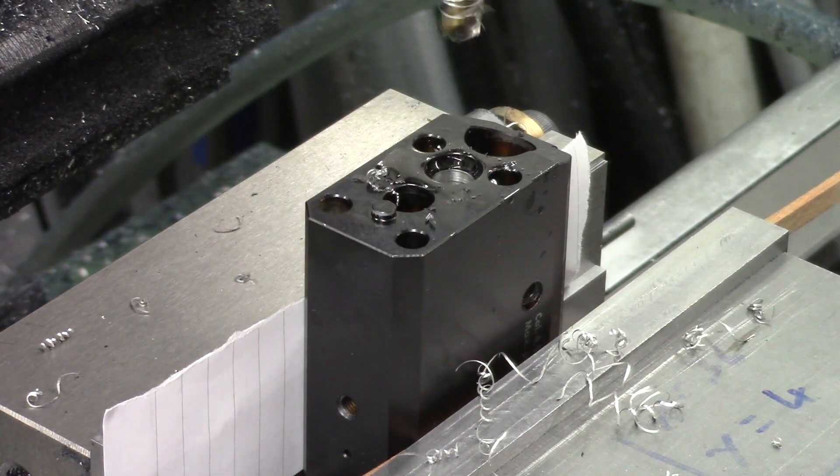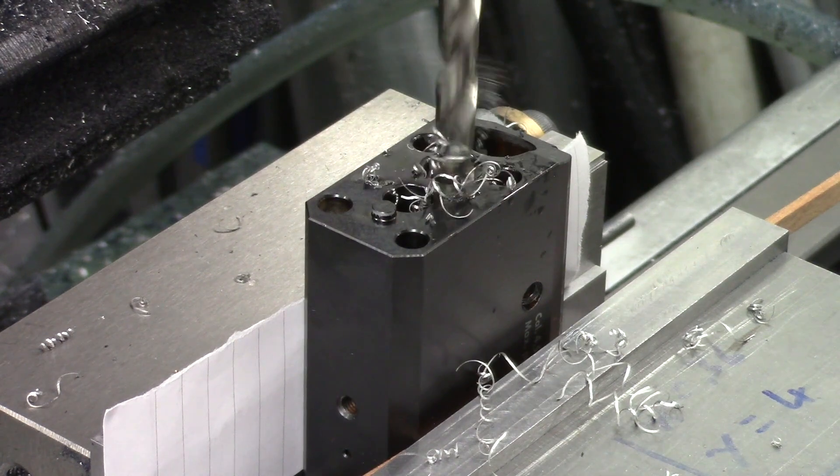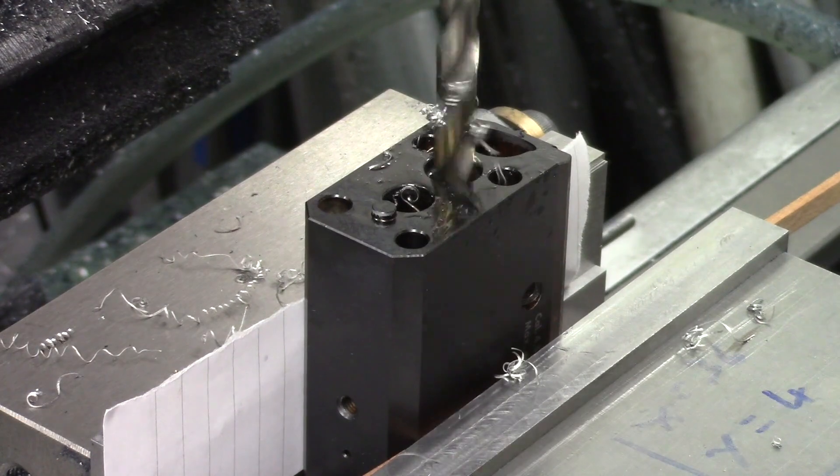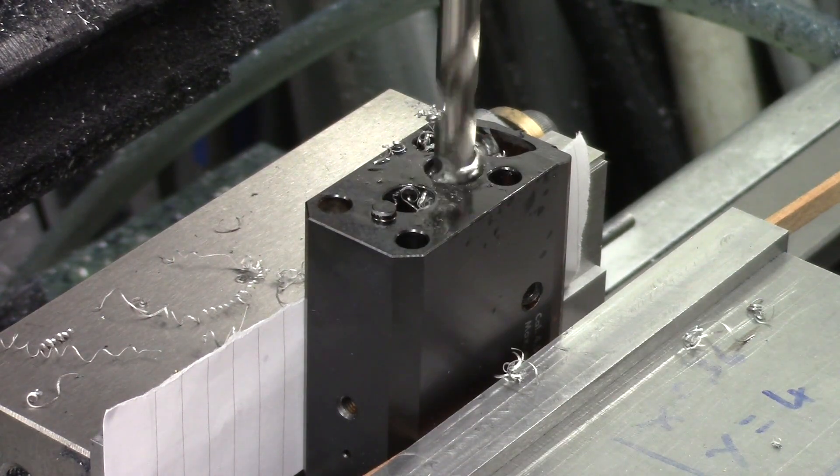So to do that what we've got to do is drill out this hole in the back side of the front block of the 9015. This hole is where the valve return spring goes and it also houses the valve.